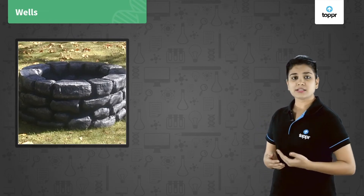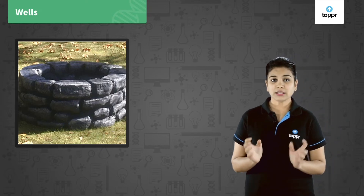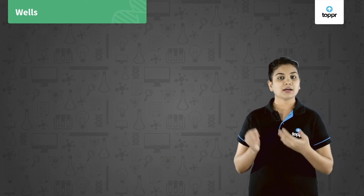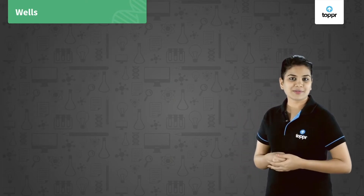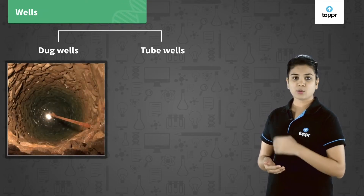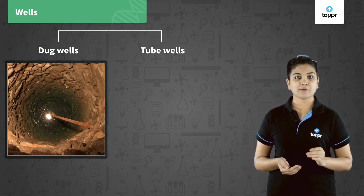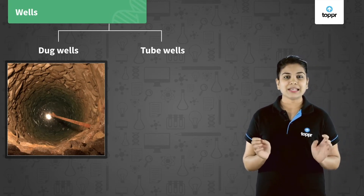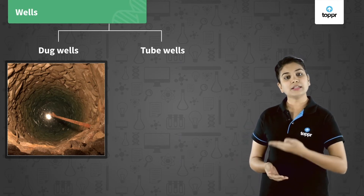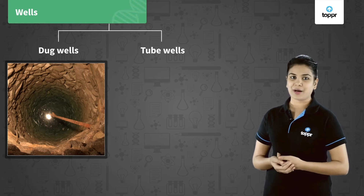Wells are constructed in those regions where sufficient or enough amount of groundwater is available. They can be divided into two types: dug wells and tube wells. In the dug well, water is collected from the water-bearing layer under the ground and this water is lifted up with the help of bullocks or pumps.